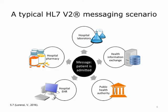Imagine a typical HL7v2 messaging scenario where a patient is admitted to the hospital. In HL7v2 terms, this event is referred to as a trigger event. The trigger event leads to the patient admission being recorded in the registration system, and a message is generated and sent to receiving systems — the hospital EHR, the hospital laboratory, possibly the hospital pharmacy, the public health authority for syndromic surveillance, or a health information exchange. Each system that receives the admission message would process it based on their application logic, and in many cases, a new visit record would be created on the receiving system.